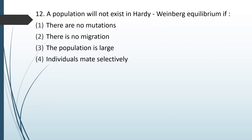A population will not exist in Hardy-Weinberg equilibrium if: (1) there are no mutations; (2) there is no migration; (3) population is large; (4) individuals mate selectively. The correct answer is option 4.